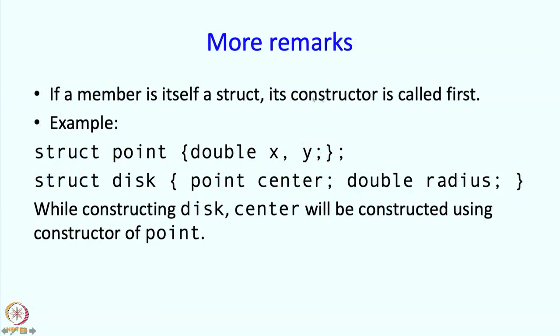One more remark. If a member itself is a struct, then its constructor is called first and even this is the default constructor. For example, struct point has double x, y. I have struct disk with point center. When constructing disk, center will be constructed according to the constructor of point.